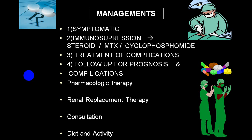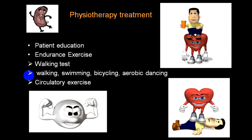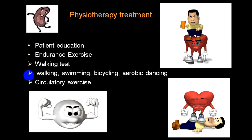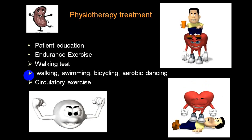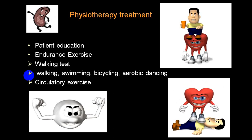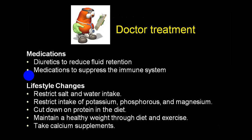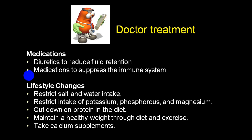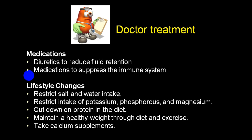Treatment is divided into pharmacological therapy, renal replacement therapy, diet, and activity. Patient education is absolutely necessary. Regular exercise — walking, swimming, bicycling, aerobic exercise — helps maintain BMI and improves kidney function. Diuretics reduce fluid retention and help decrease blood pressure. The main treatment is immune suppression whenever there is immune-mediated kidney damage. Lifestyle changes include restriction of sodium, water intake, and potassium depending on the water balance.